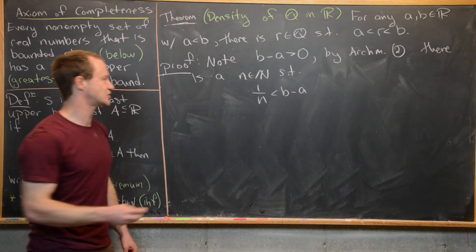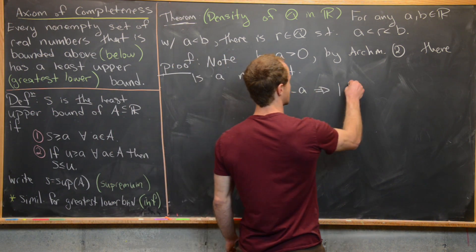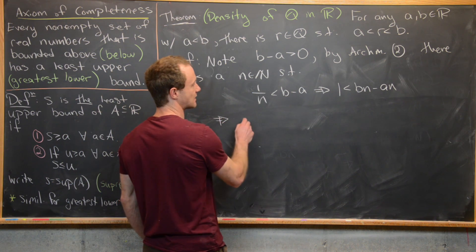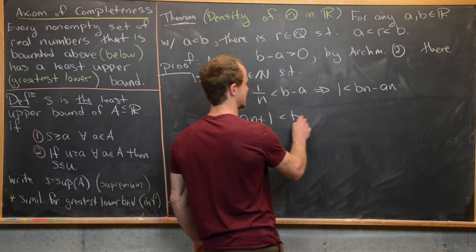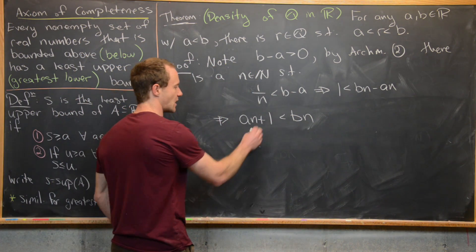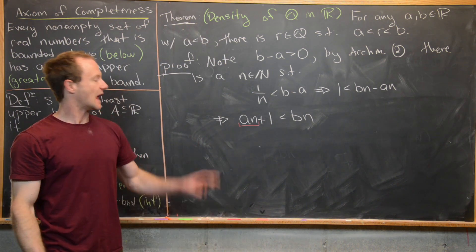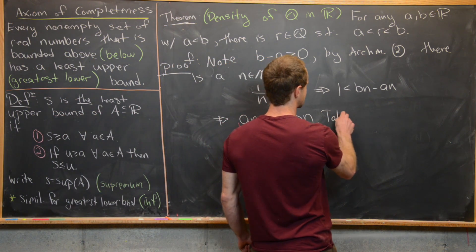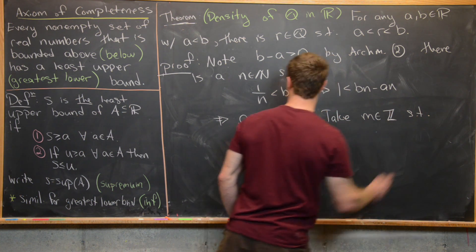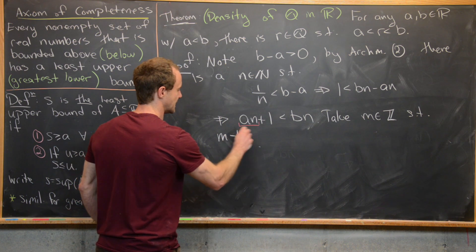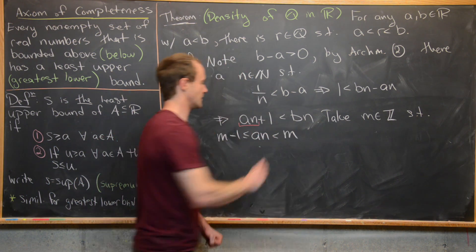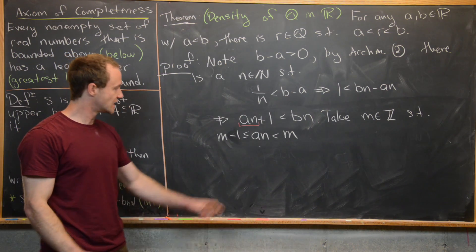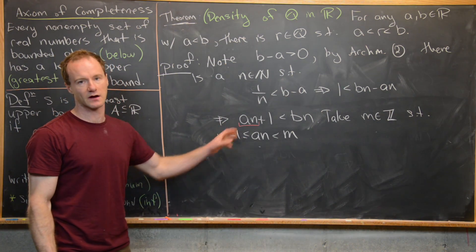Clearing fractions, 1/N < B − A is equivalent to 1 < BN − AN, which rearranges to AN + 1 < BN. Now focus on the real number AN. Any real number can be sandwiched between two consecutive integers, so choose integer M such that M − 1 ≤ AN < M.